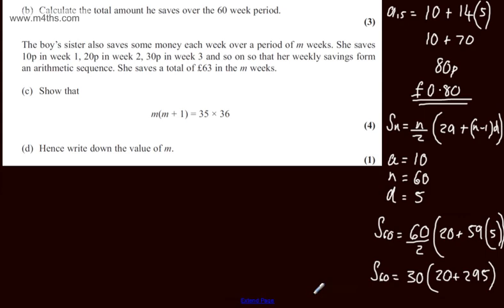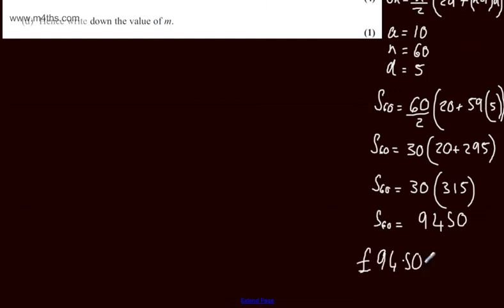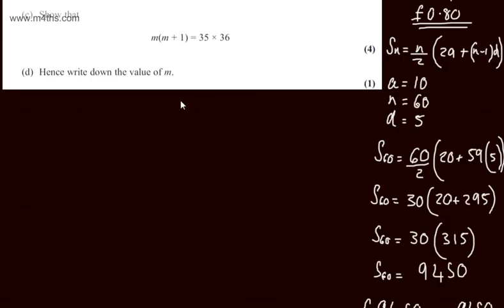So we end up with the sum of the first 60 terms, let's write this here, it's going to be 30 times 315. This will give me s sub 60 is going to be 9,450. So we can either say that this is £94.50 or 9,450p. That is the total he'll save in the first 60 weeks.